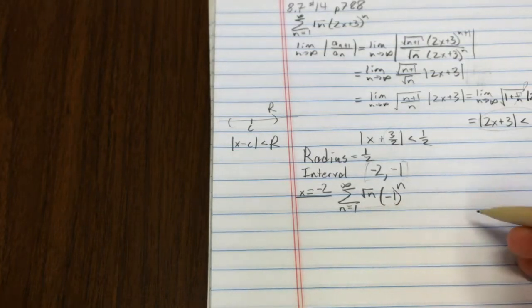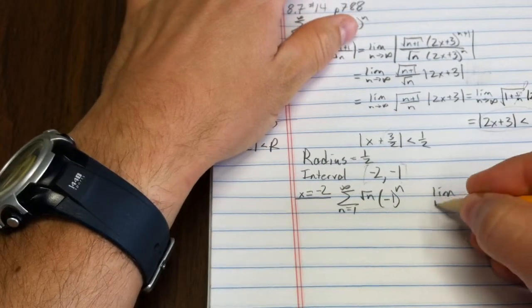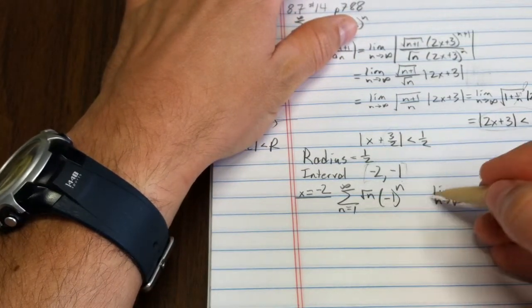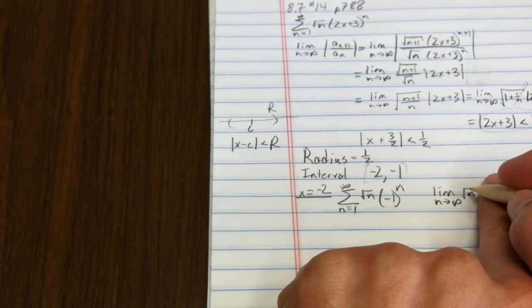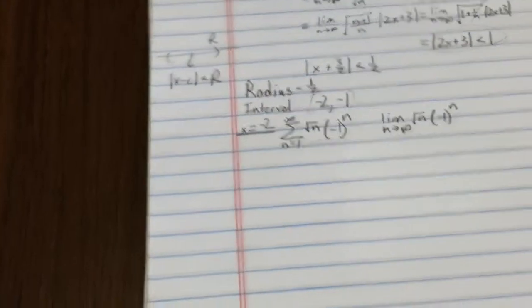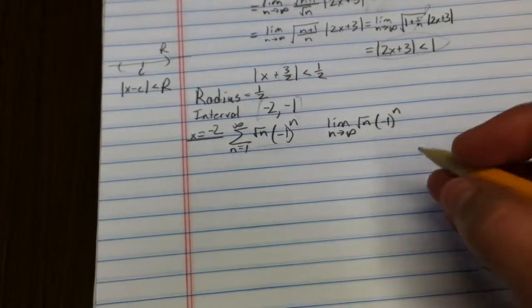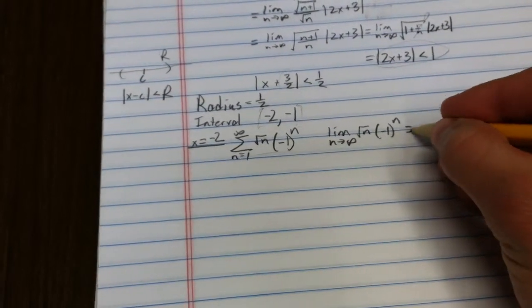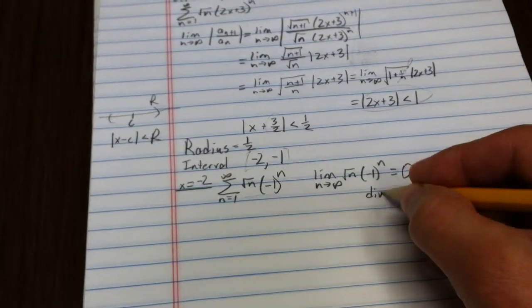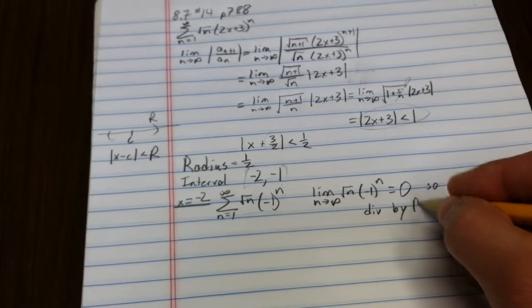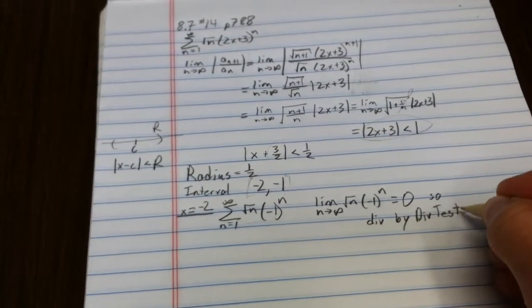I don't think the individual terms are even getting small. So, I will say the limit as n goes to infinity of the individual terms of root n negative 1 to the n. See, this is flipping the sign, but this piece is just getting bigger. Whoops. I don't think that's getting smaller. So, what I'm going to do is I'm going to say that doesn't equal 0. So, it diverges by the divergence test.